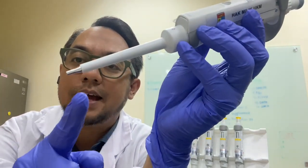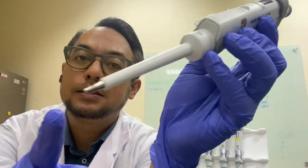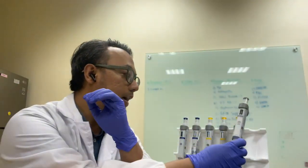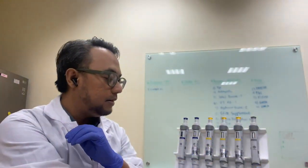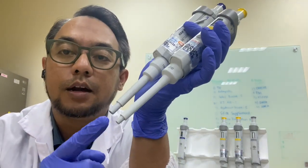So, the 10 microliter pipette has different edge. This one is made from steel. But the rest, you can see, the rest is made out of plastics.